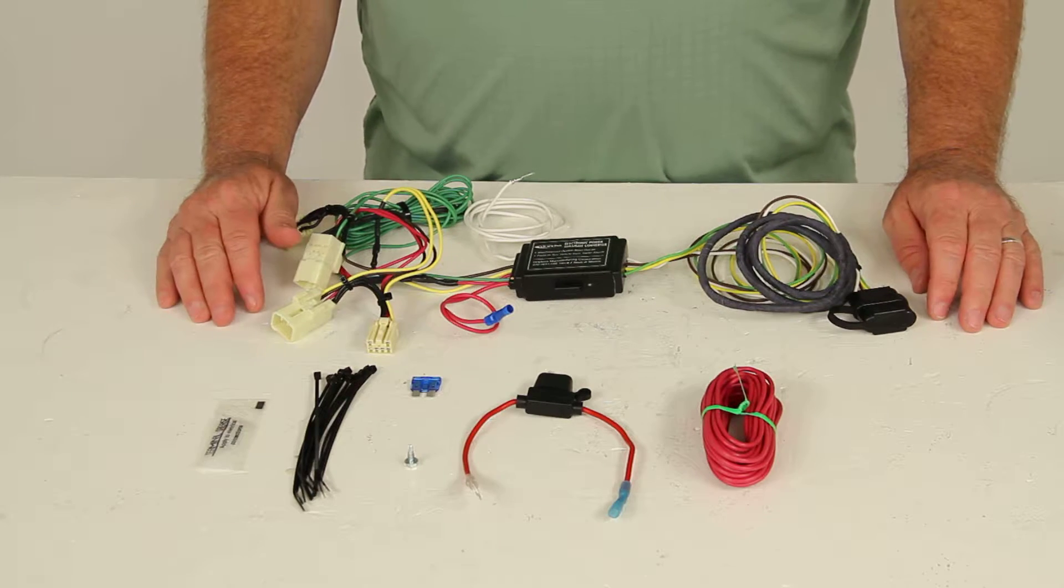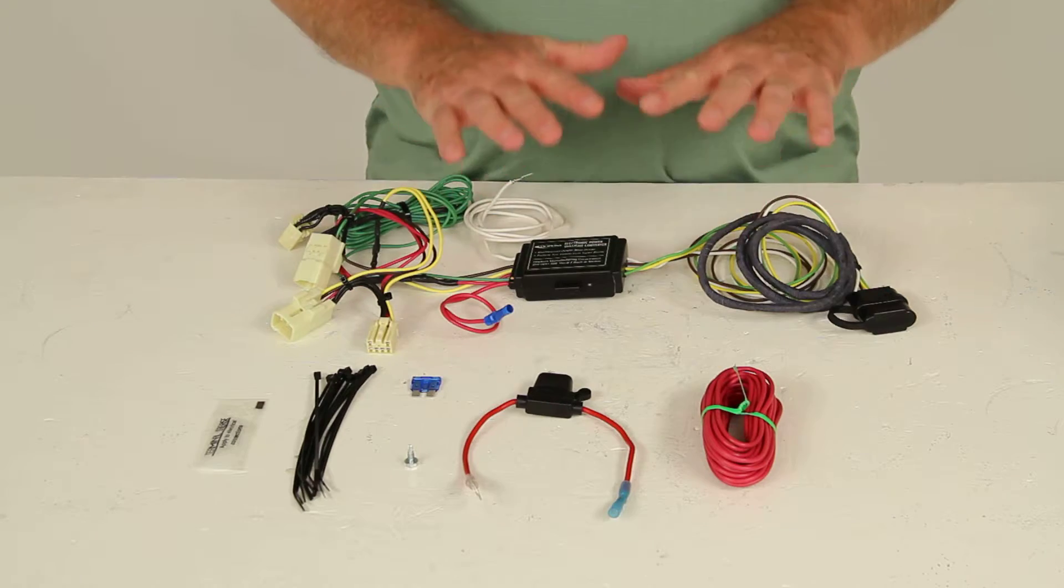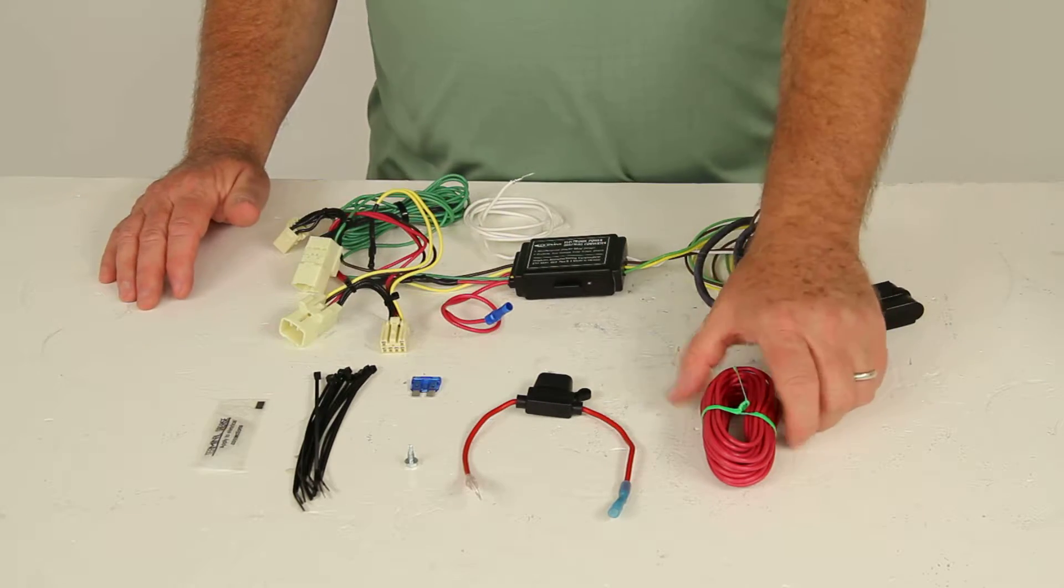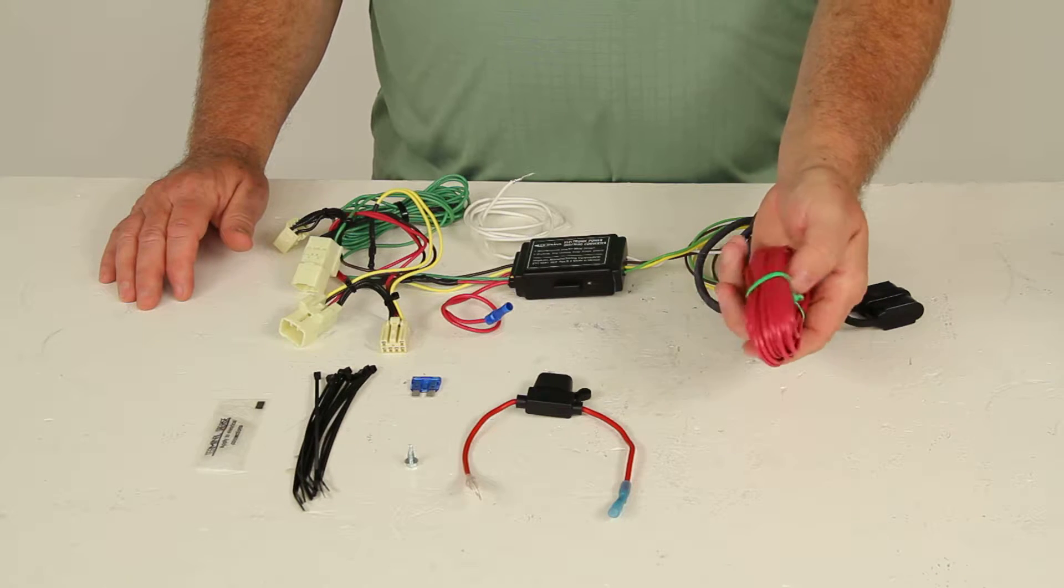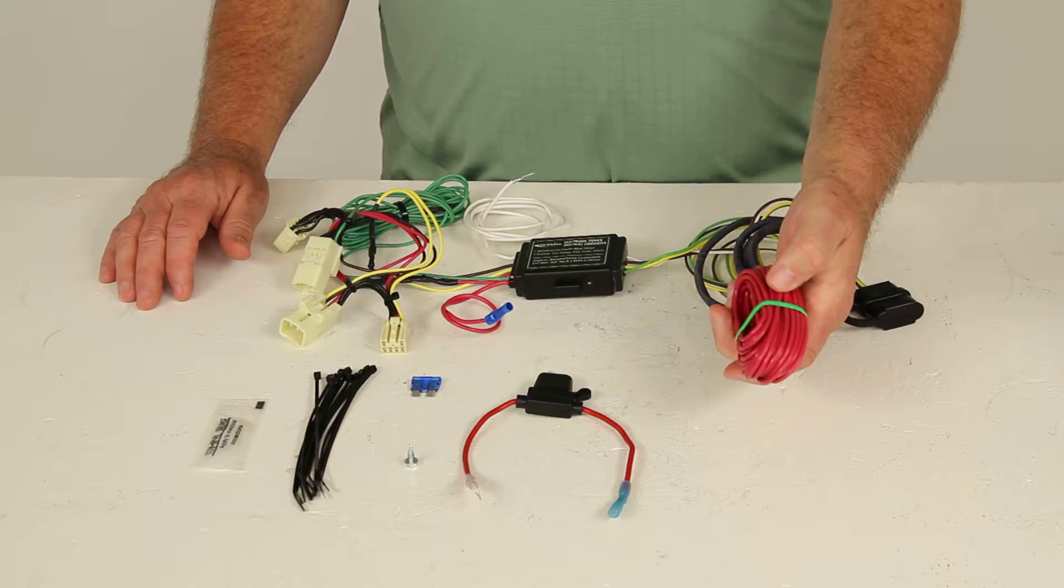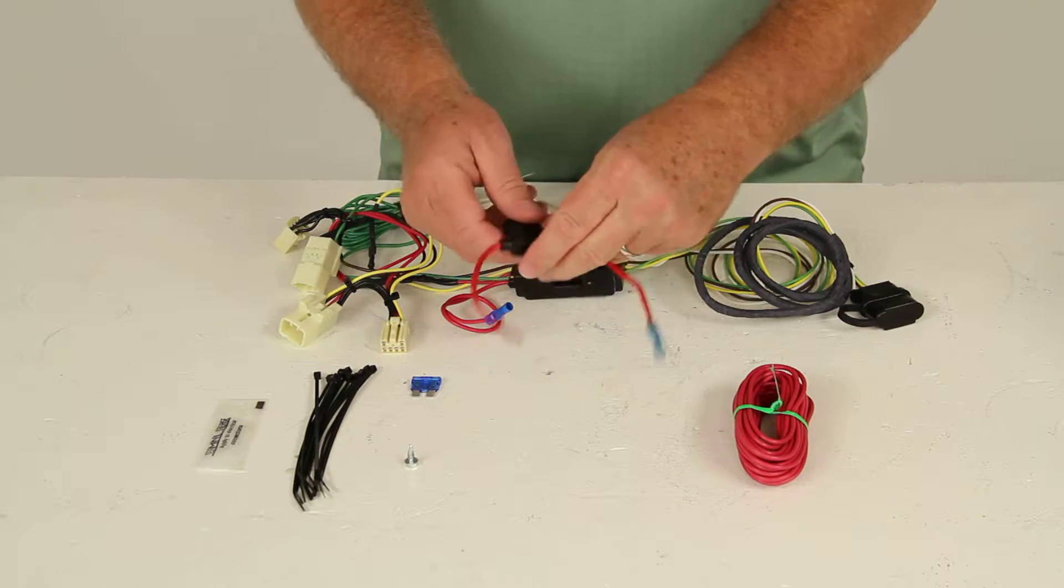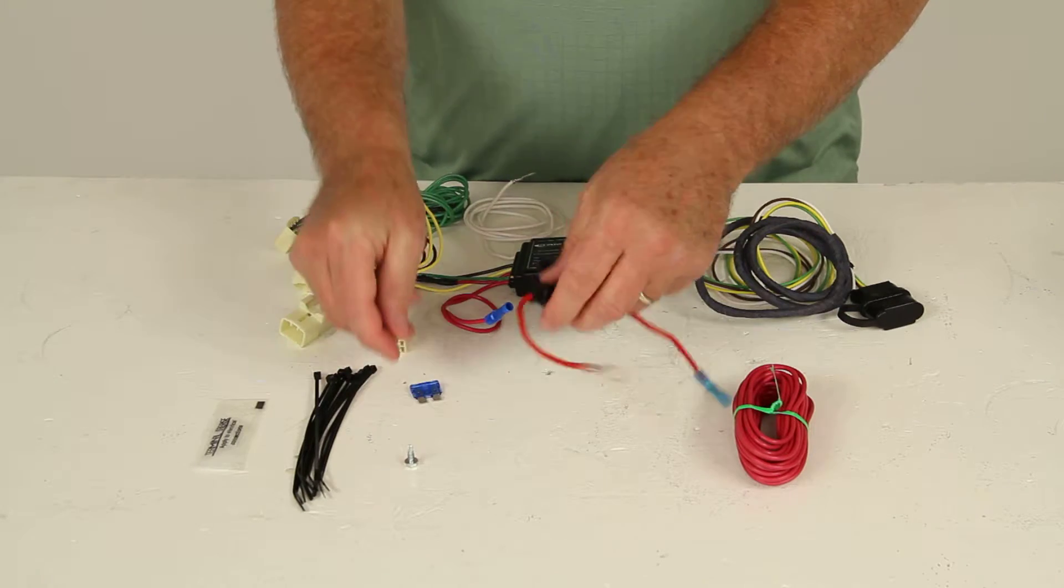Now basically everything for this part number is included which is all shown here on the table. It includes this powered converter module with the wiring and the four-way. It includes this 14 gauge extra length of wire which would be needed to run to your battery. I'll show you how to do that in a minute. Comes with this fuse assembly. The included 15 amp fuse is made to go in there.